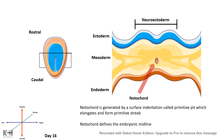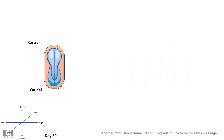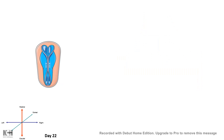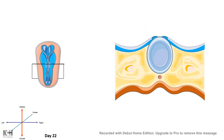The neuroectoderm, which is above the notochord, folds, and this folding is known as the neural fold. Due to this folding, a groove or pit is formed which is called the neural groove. The edges of the neural fold invaginate inward, and as they invaginate they almost form a tube-like structure, and eventually the tube closes — the neural tube closure is complete.